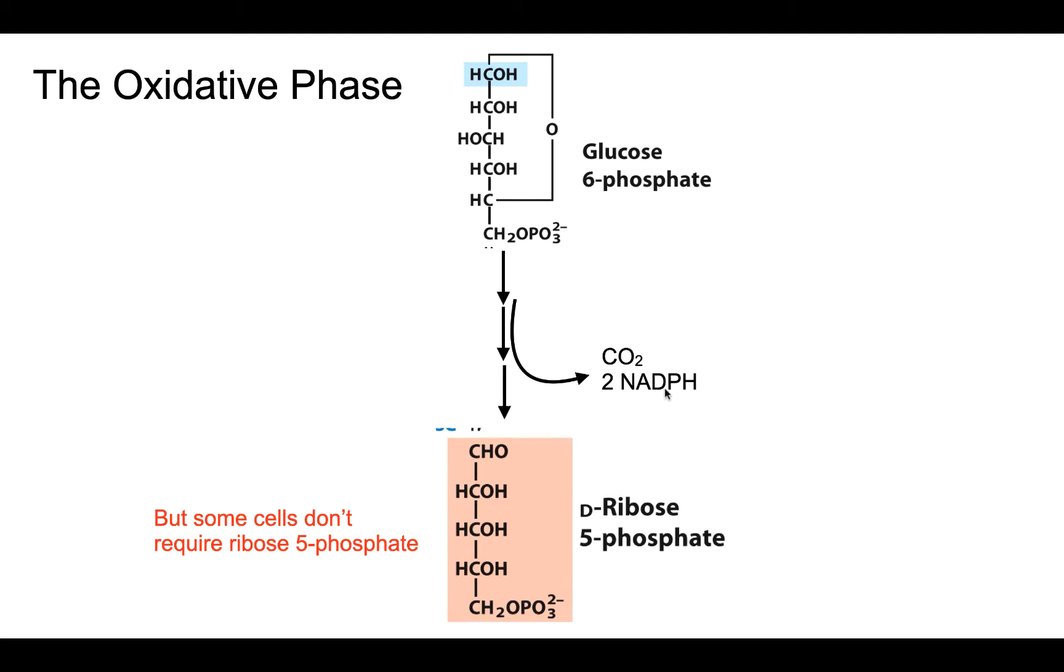We are generating two NADPH molecules and one molecule of ribose 5-phosphate. But one potential problem is that some cells may need a lot of NADPH, so they need this oxidative phase, but they don't need the corresponding ribose 5-phosphate.